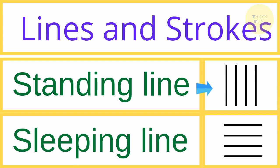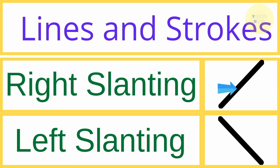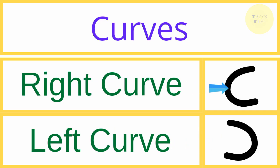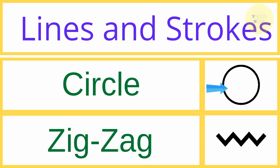Standing line. Sleeping line. Right slanting line. Left slanting line. Up curve. Down curve. Right curve. Left curve. Circle. Zigzag.